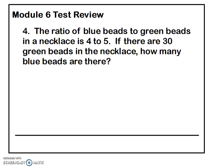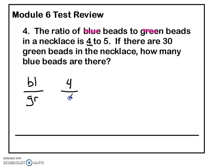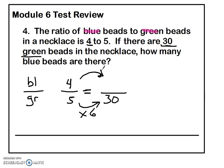Number four: the ratio of blue beads to green beads in a necklace is four to five. If there are 30 green beads in the necklace, how many blue beads are there? If you set it up in fractions, the math becomes easy. Reading carefully, it says blue to green, so blue beads go on top and green on the bottom: four over five equals question mark over 30. It says 30 green beads, so 30 is the second term. How do I get from five to 30? Multiply by six. Four times six is 24 — so the answer is 24 blue beads.